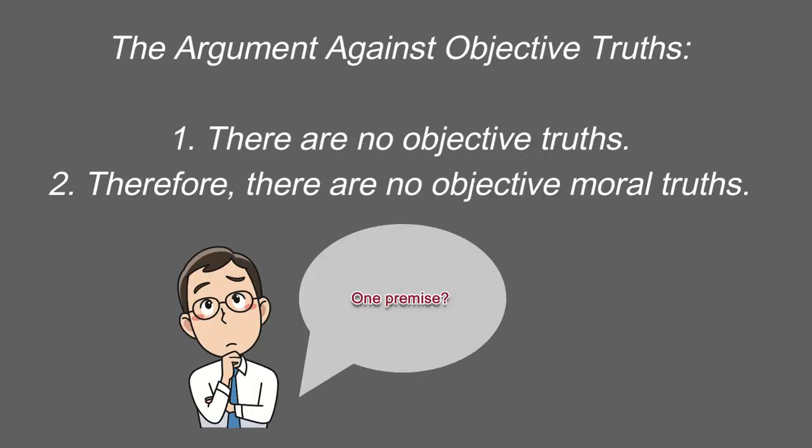The argument against objective truths could not be any simpler. Premise 1: There are no objective truths. Therefore, the conclusion: there are no objective moral truths. An important thing to note is that this argument has only one premise. Many may be confused by this since most arguments contain more premises, but an argument with one premise is not an issue at all. The logic is perfect in that if Premise 1 is true, then the conclusion must also be true.